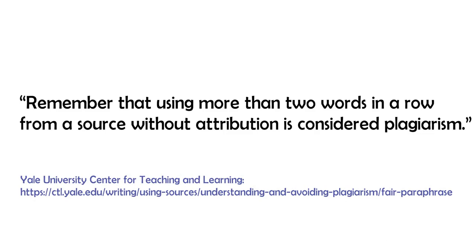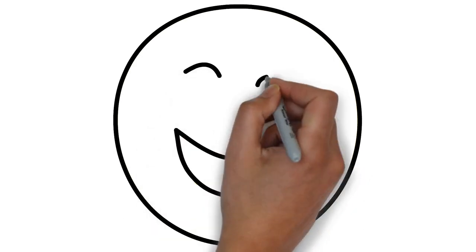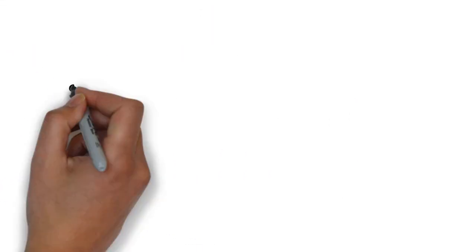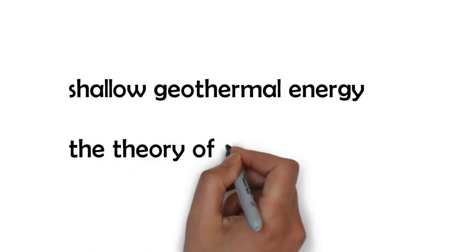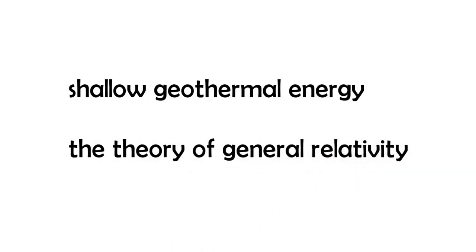So if you take more than two words in a row from another author, it has to be attributed. Now, you'll be pleased to hear that there is an exception to this, and that relates to when you have fixed phrases that are more than two words. For example, if I were to write 'shallow geothermal energy' or 'the general theory of relativity,' I wouldn't have to put either of those into quotation marks, even though they're more than two words, because those are just the phrases for those things. They don't belong to any one author per se.